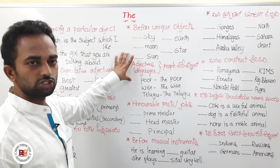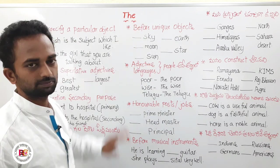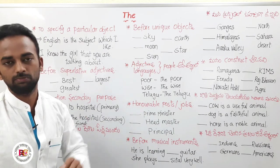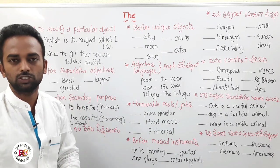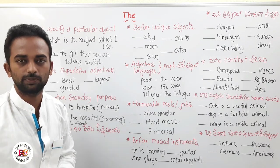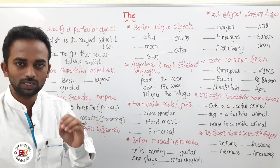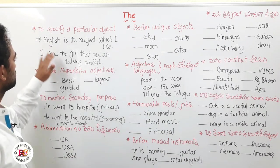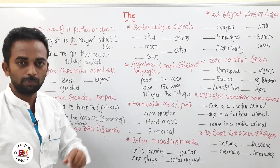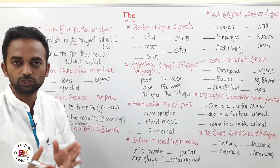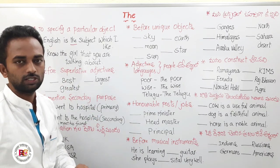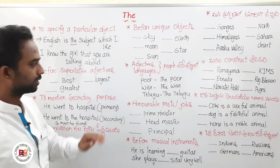Today I wrote 12 points about them. So let us see the first point. The first point is: we use 'the' to specify a particular object. If you specify a particular object, you use 'the'.